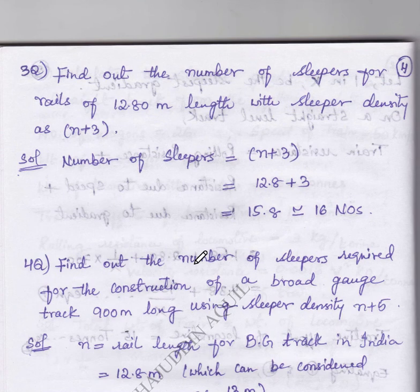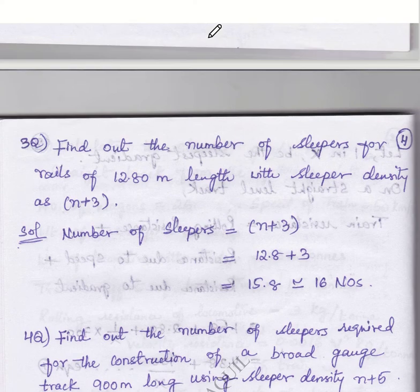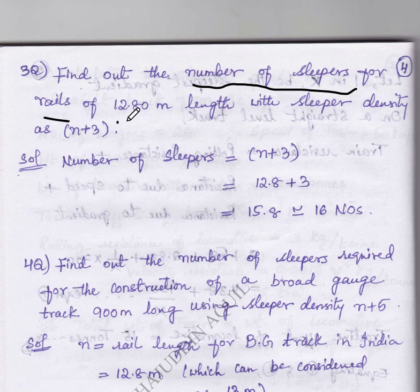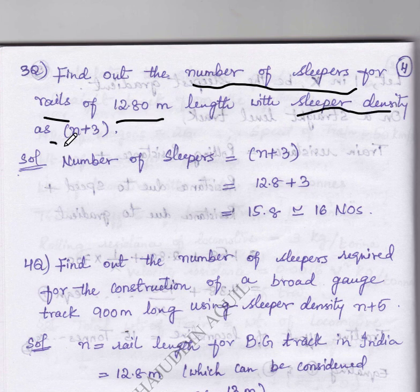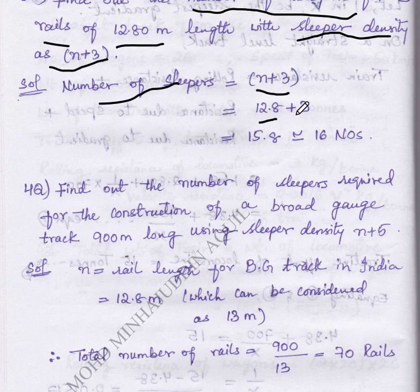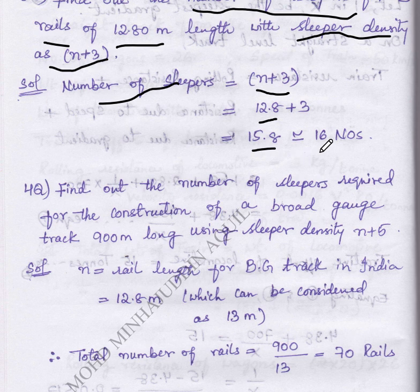Now we will deal with the next problem: find out the number of sleepers required for rails whose length is given as 12.8 meters with sleeper density as n plus 3. The number of sleepers can be found out by the formula n plus 3. n is 12.8, so we substitute n value as 12.8 plus 3, we will get 15.8.